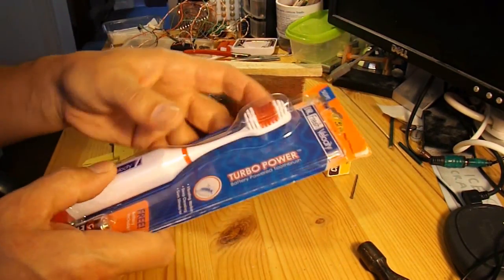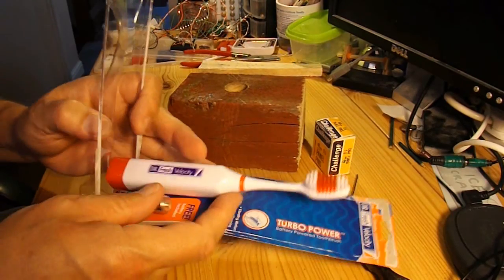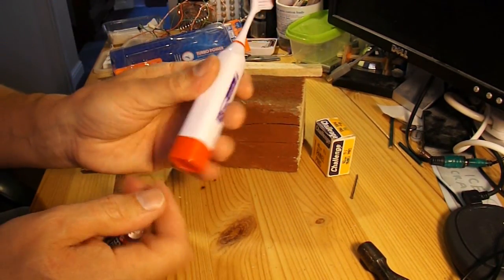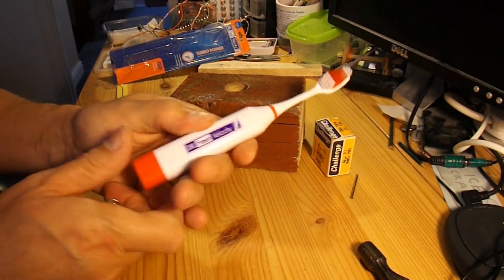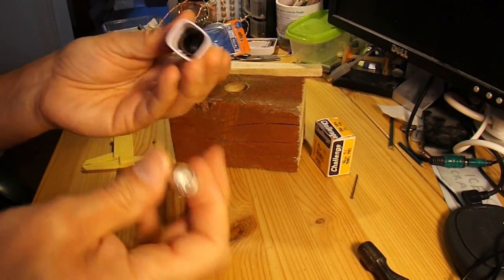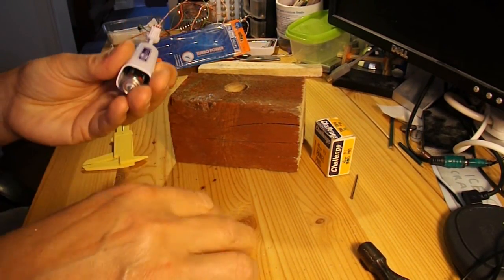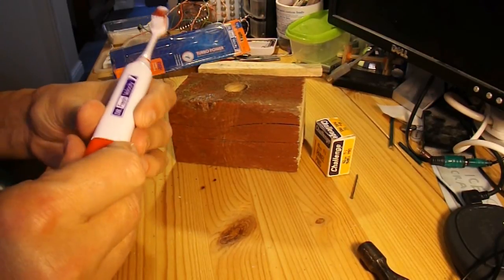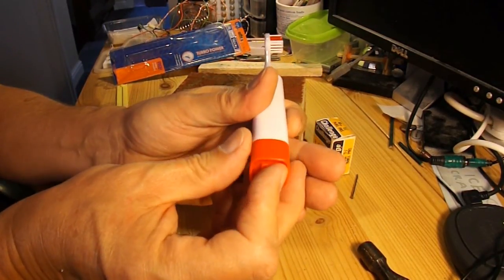So first of all I'll just show you the motor itself. That's obviously the toothbrush, bottom comes off, battery goes in which comes free with the toothbrush, it's quite handy, and it's got a switch on the bottom, switch it on and off.